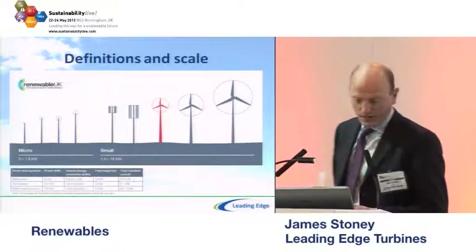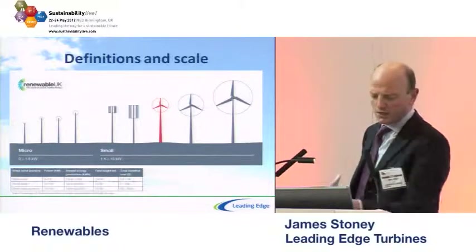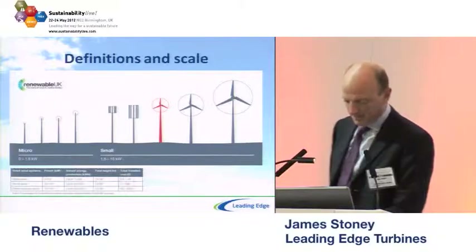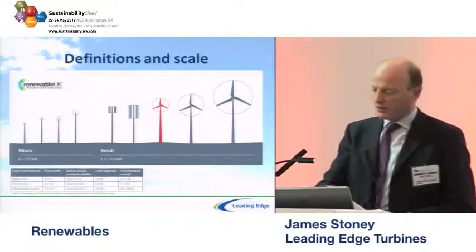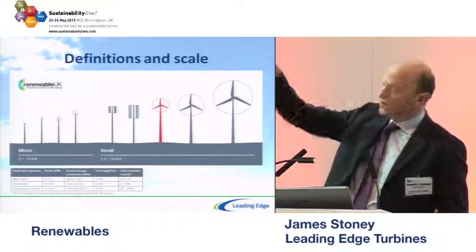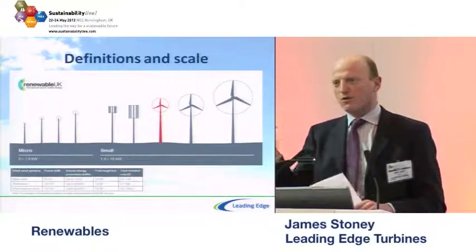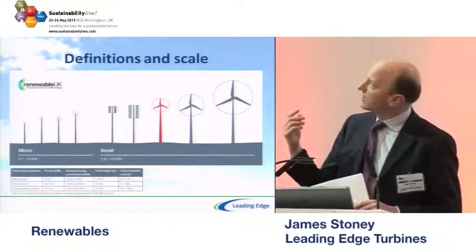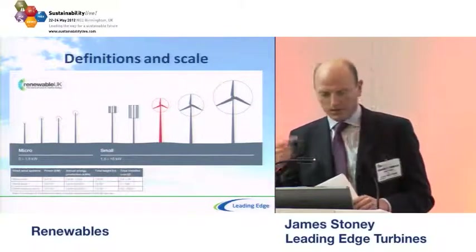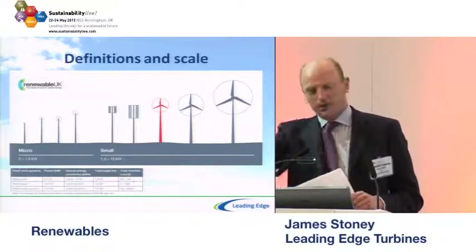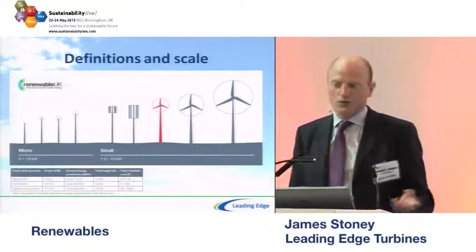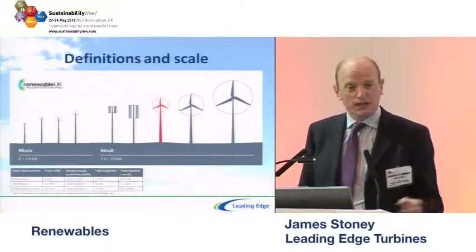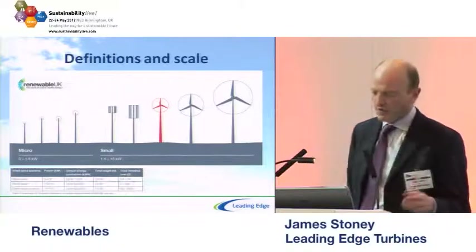The largest turbine shown is about 15 kilowatts with a nine meter diameter. The middle two are vertical axis wind turbines — sometimes called egg whisks — which spin on a vertical axis and are often said to perform well in turbulent urban conditions.